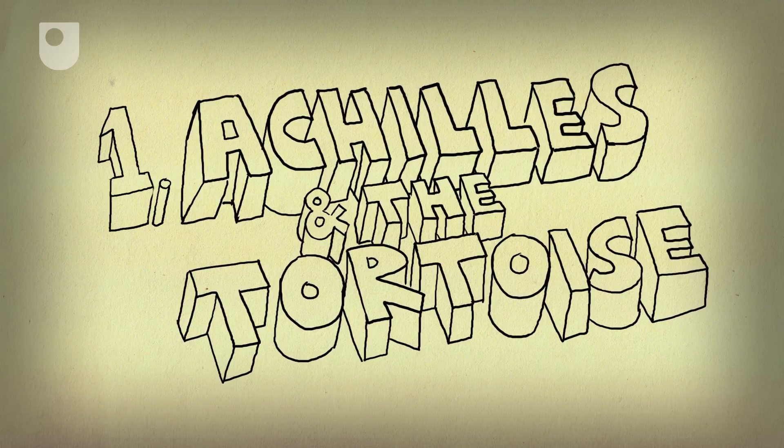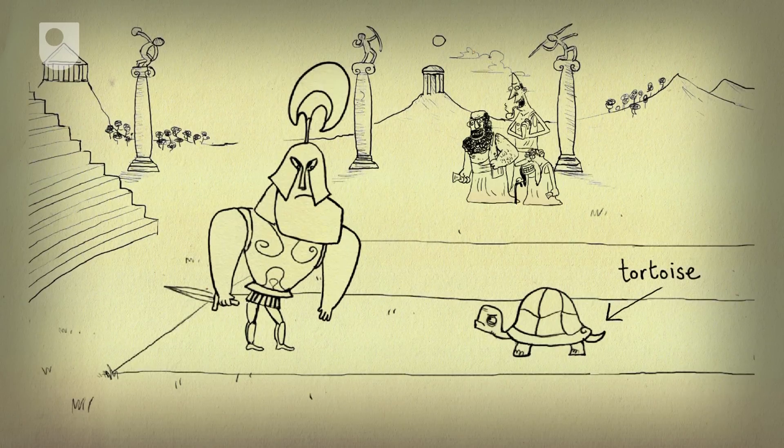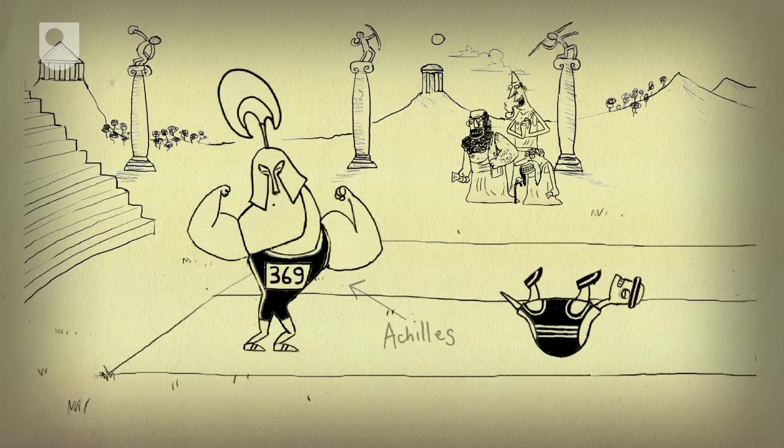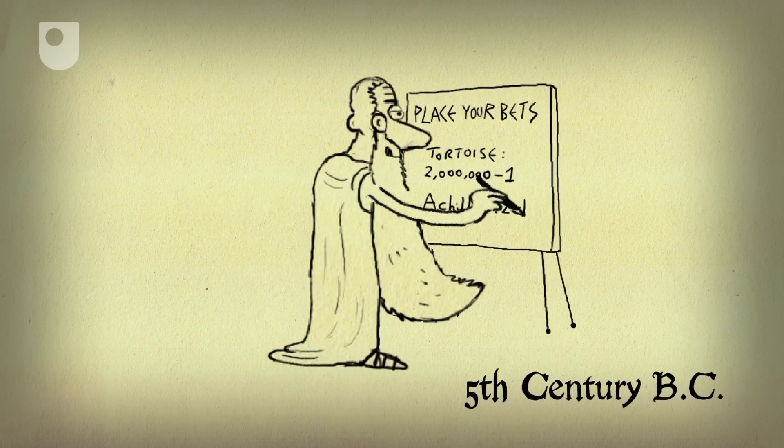60 Second Adventures in Thought Number 1. Achilles and the Tortoise. How could a humble tortoise beat the legendary Greek hero Achilles in a race? The Greek philosopher Zeno liked the challenge and came up with this paradox.